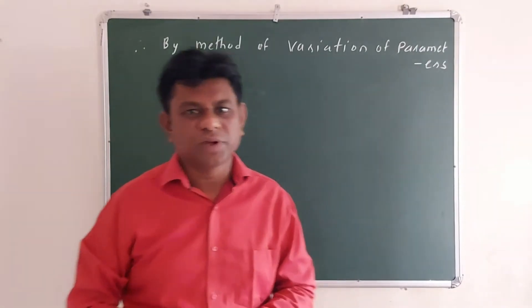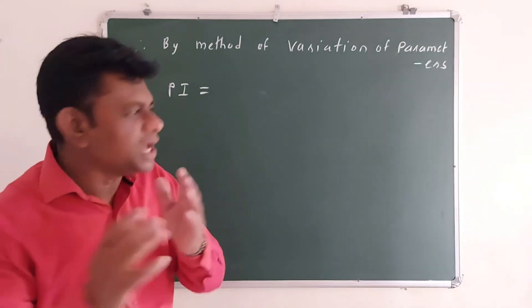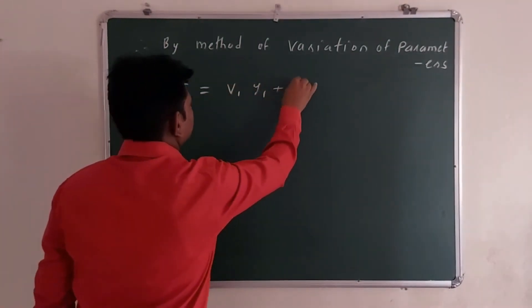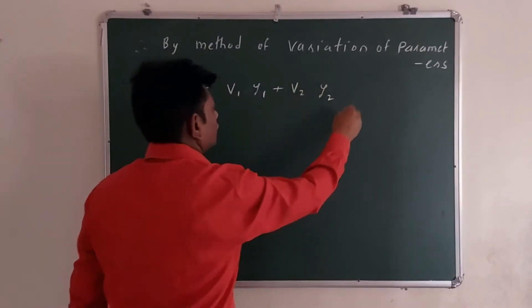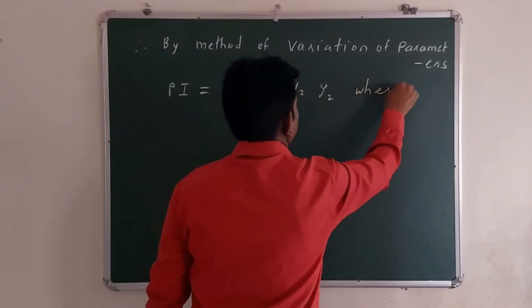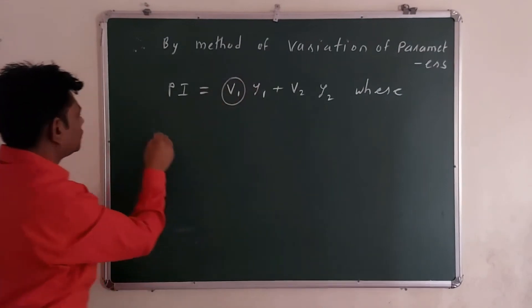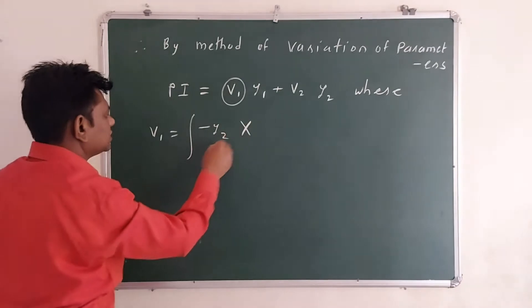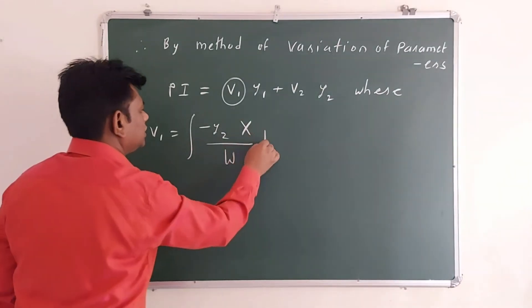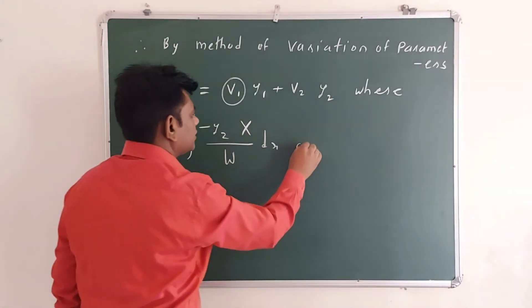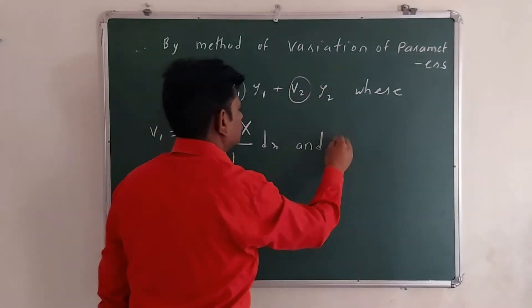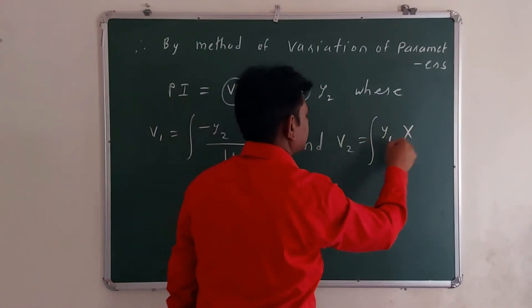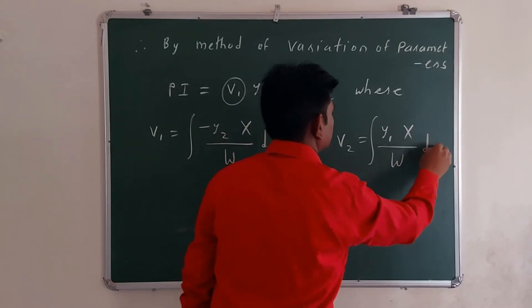By the method of variation of parameters, PI = V1·y1 + V2·y2, where V1 = ∫(-y2·X / W) dx and V2 = ∫(y1·X / W) dx, with X denoting the right-hand side of the differential equation.